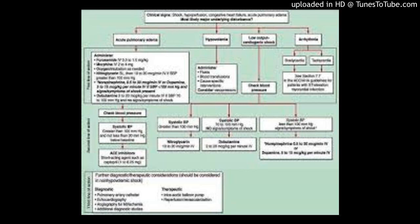The final pneumoconiosis is asbestos. Asbestos fiber exposure is classically seen in construction workers, plumbers — where it was used to insulate pipes — and shipyard workers. Asbestos does a couple of things: it creates fibrosis in the lung or fibrosis in the pleura, or cancer in the lung or cancer in the pleura. That's my way of remembering it: fibrosis of the lung, fibrosis of the pleura, cancer of the lung, cancer of the pleura.